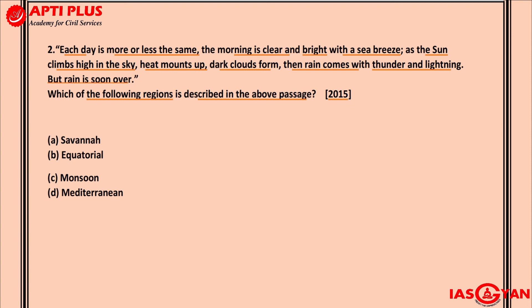The second hint is that the morning is clear and bright with a sea breeze. For a sea breeze to flow, there must be low pressure developed over the land. Low pressure develops only if the temperature is high enough, causing the air above the land to get heated up, undergo convection, and rise vertically, giving rise to low pressure over the land. The comparatively cooler air over the surrounding sea then rushes towards the land to fill this low pressure, resulting in the sea breeze.